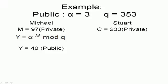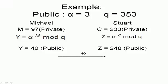Then Stuart selects his own private key, that is, for example, C equals 233. Then he finds out Z. Z comes out to be 248.